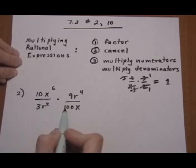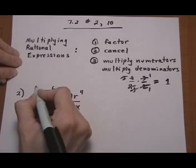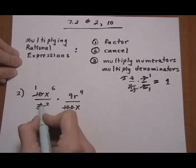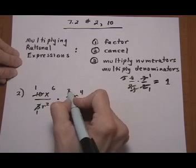Here right away I see that 10 and 100 divide by 10. We get 1 and 10. 3 and 9 divide by 3. We get 1 and 3.